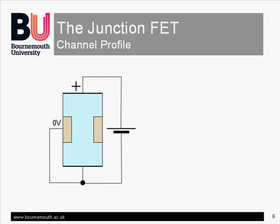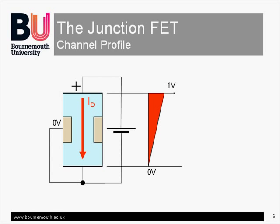With no voltage on the drain, the depletion layer is evenly spaced around the gate. However, the drain is normally kept positive to draw a drain current. As the drain current flows through the channel, it sets up a potential gradient which increases linearly from the source through to the drain. The reverse bias between the gate and the channel will be higher at the drain end than at the source end, and the depletion layer will be correspondingly larger towards the drain.